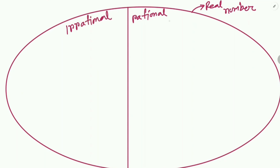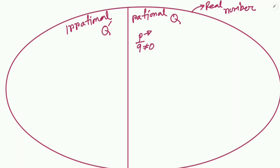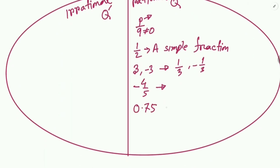Rational numbers are represented by Q, and irrational numbers are represented by Q prime. What are rational numbers? Rational numbers are any numbers that can be expressed as the quotient or fraction p/q of two integers, where p is the numerator and q is not equal to zero. This includes all kinds of fractions — both positive and negative integers — since any integer z is a rational number. For example, a negative fraction like −4/5 is also a rational number.